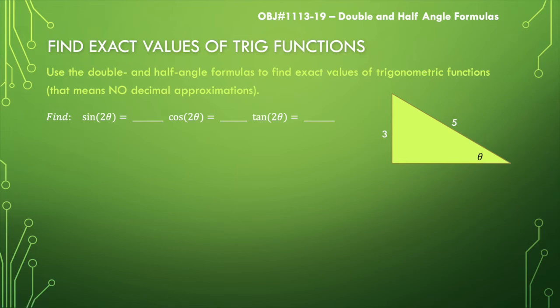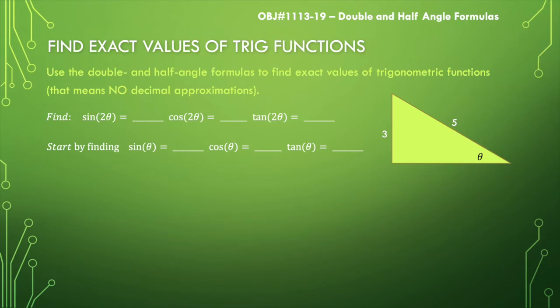We could use decimal approximations — use a calculator, do an inverse sine to find theta, double it, and do all that. But what we're tasked with here is finding the exact values, which means I'm going to need to use those formulas. So the very first thing I want to do is find the three primary trig functions for theta: sine theta, cosine theta, and tangent of theta.